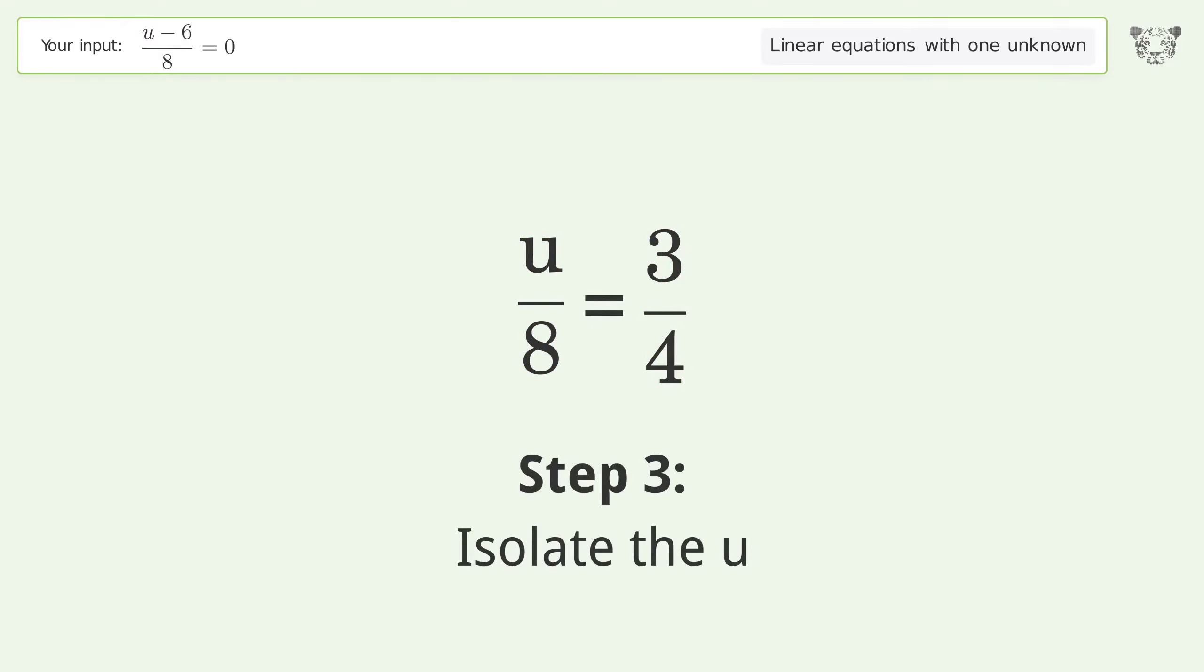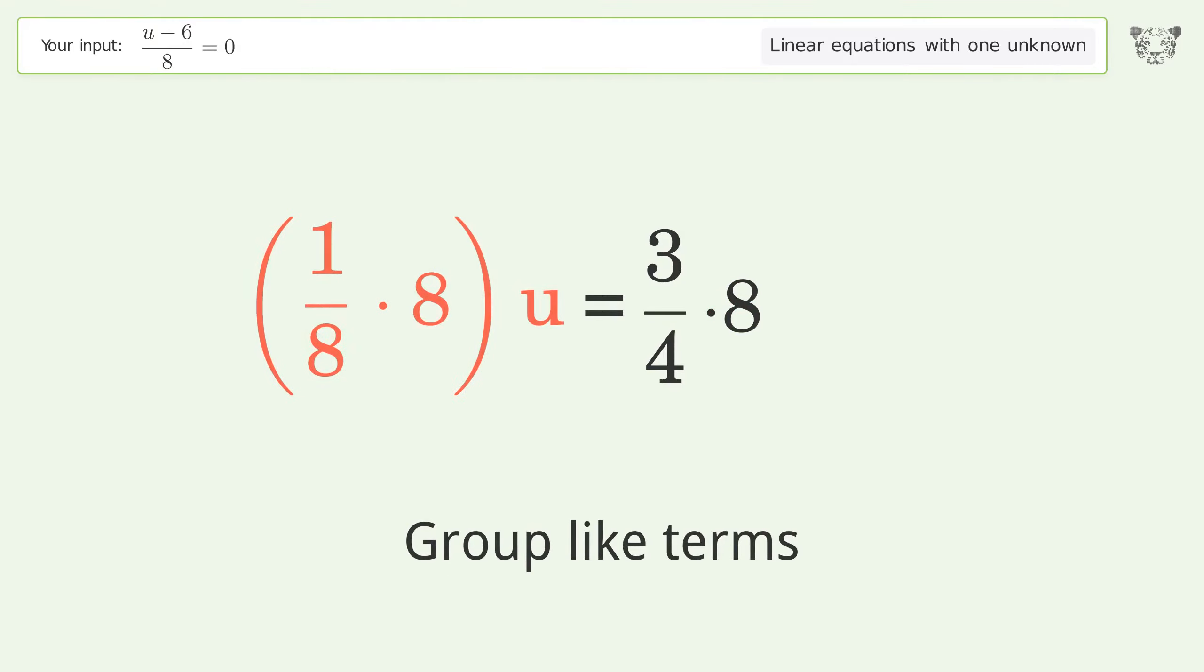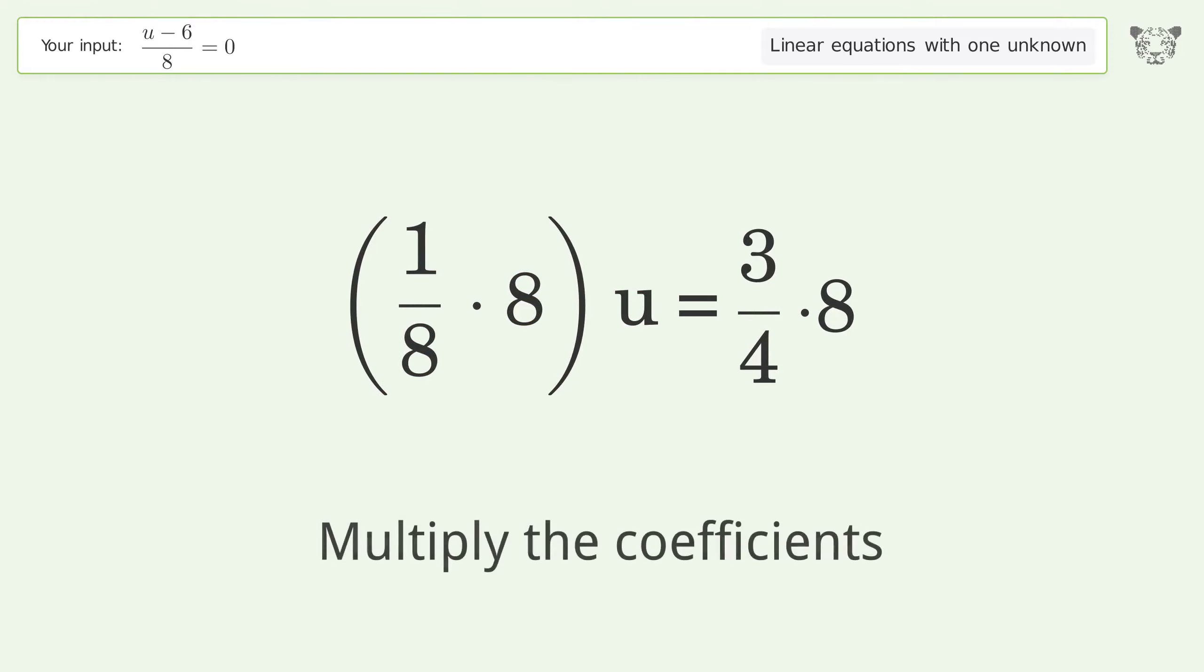Isolate the u. Multiply both sides by 8. Group like terms, then multiply the coefficients.